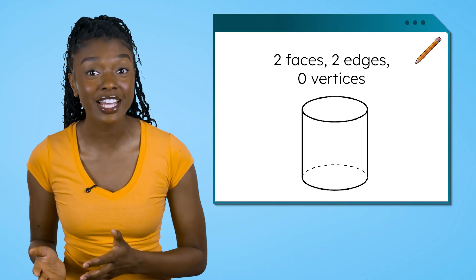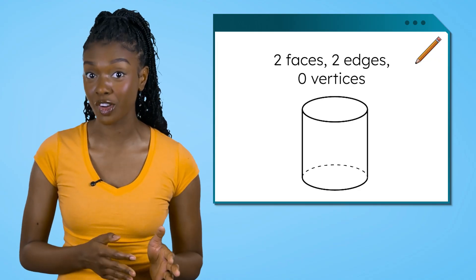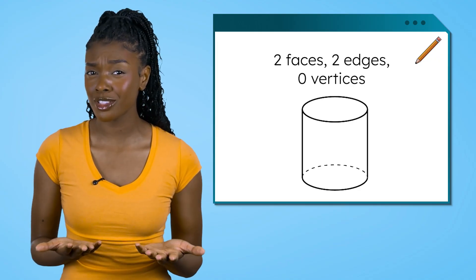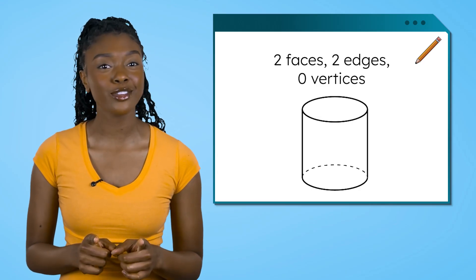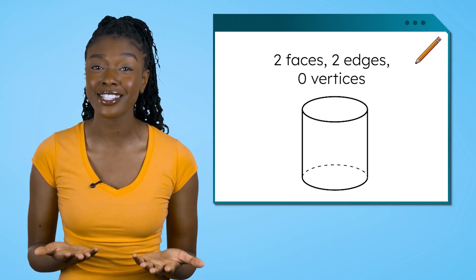The cylinder has two faces, two edges, and zero vertices. Can it be the answer to our math quest? No. It's not the answer to our math quest because it has faces and edges.